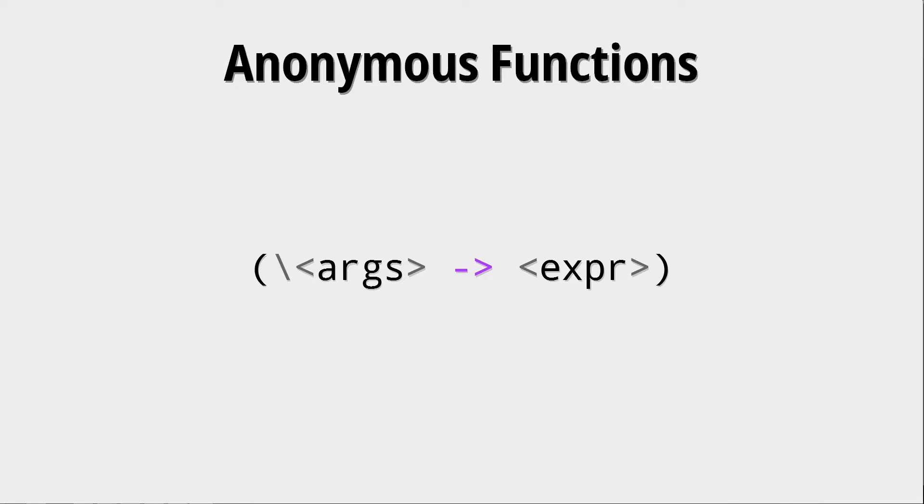An anonymous function is a function that does not have a name when defining the function. It consists of a backslash and a list of arguments and then an expression. This is very similar to how lambda calculus looks and works.